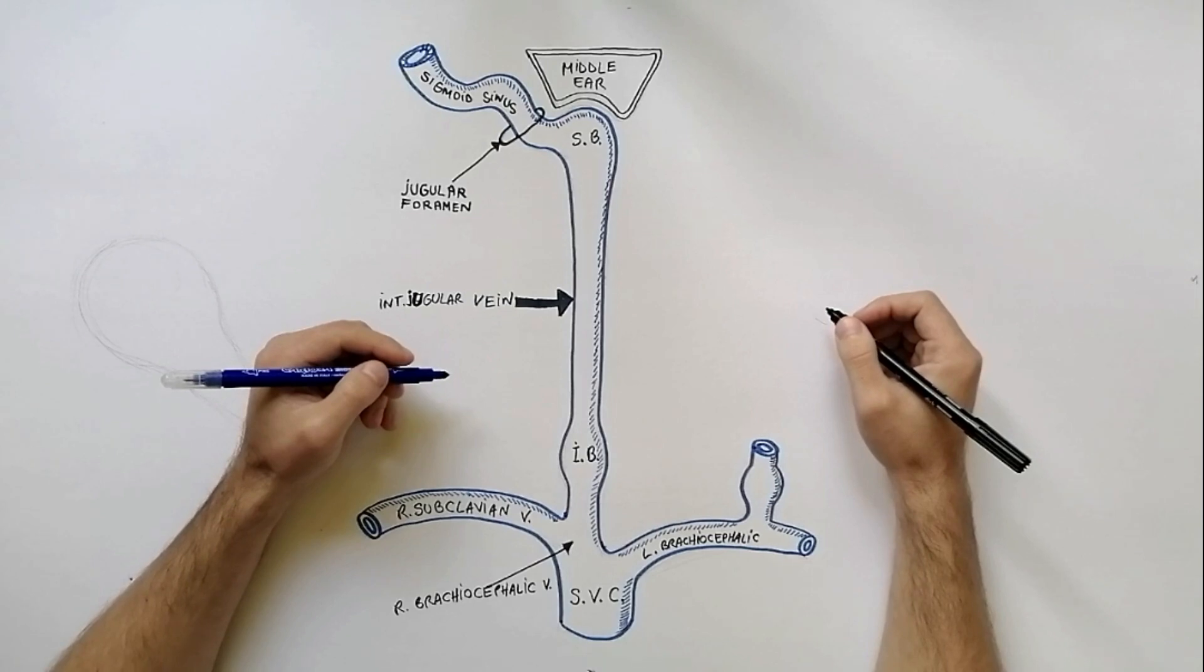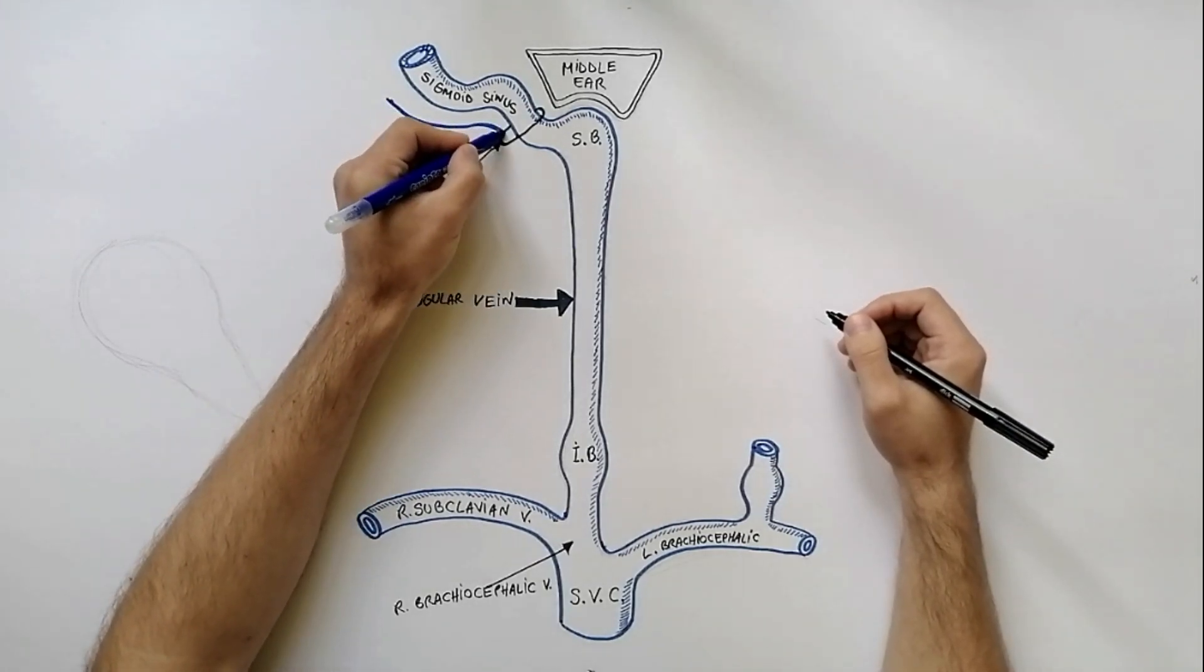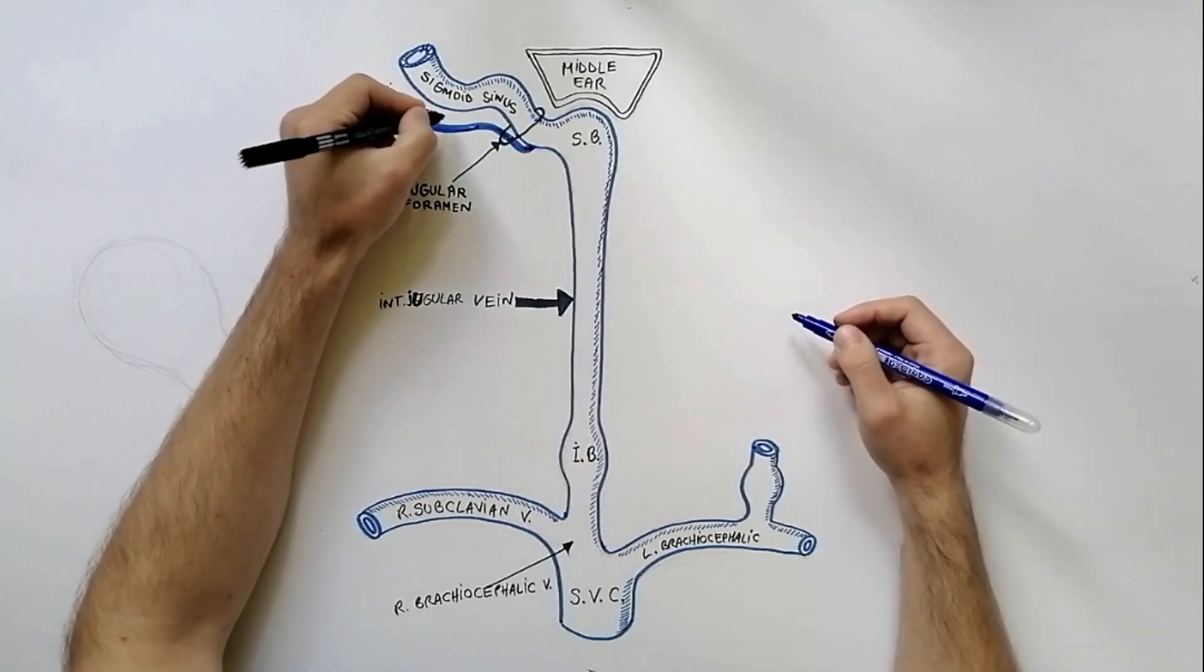We are now in a position to draw the tributaries of the internal jugular vein. Just inferior to the jugular foramen it drains the inferior petrosal sinus.